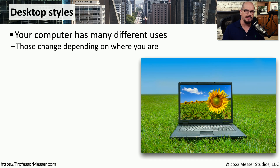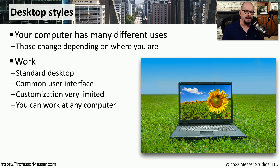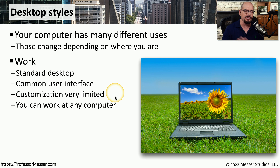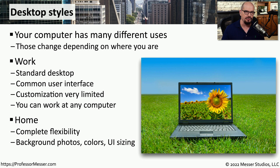Our computers and mobile devices have many different capabilities, and we might use them differently at work versus at home. A work device might have a standard desktop with a common user interface, so regardless of what support person needs to work on your system, they'll find an environment exactly the same as every other device on the network. This is why there's usually a limitation on customization. If this is your home computer, you have complete control — you can add background pictures or modify any aspect of the user interface without worrying about support issues.